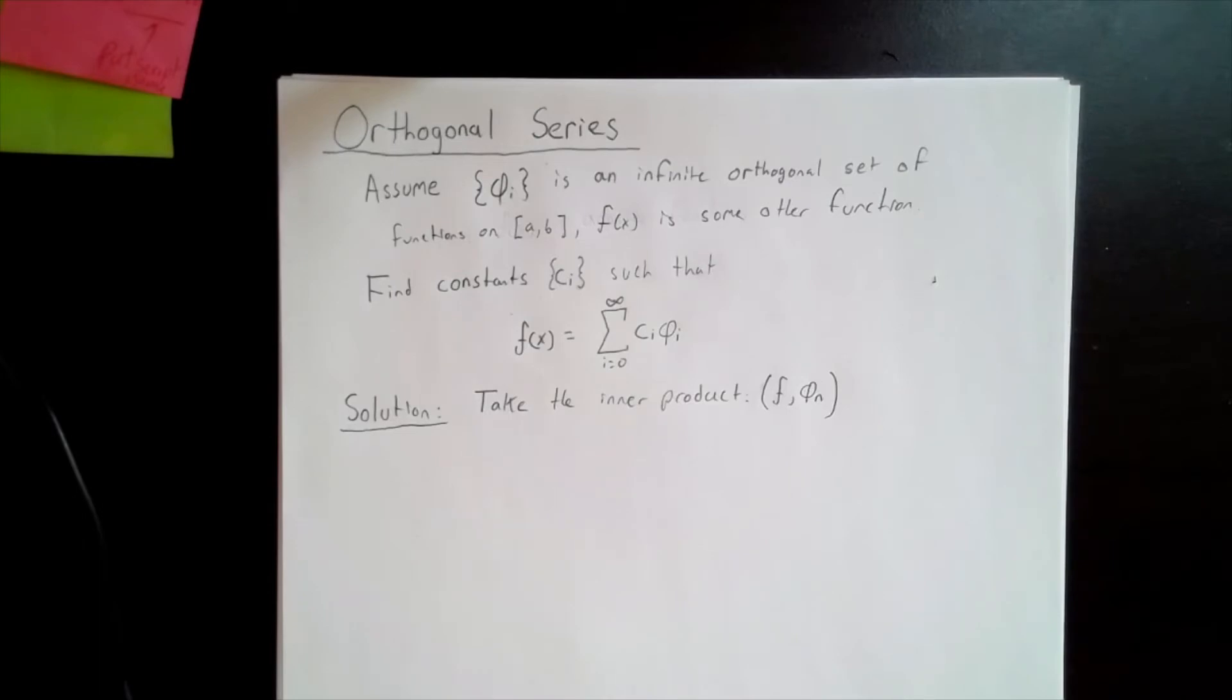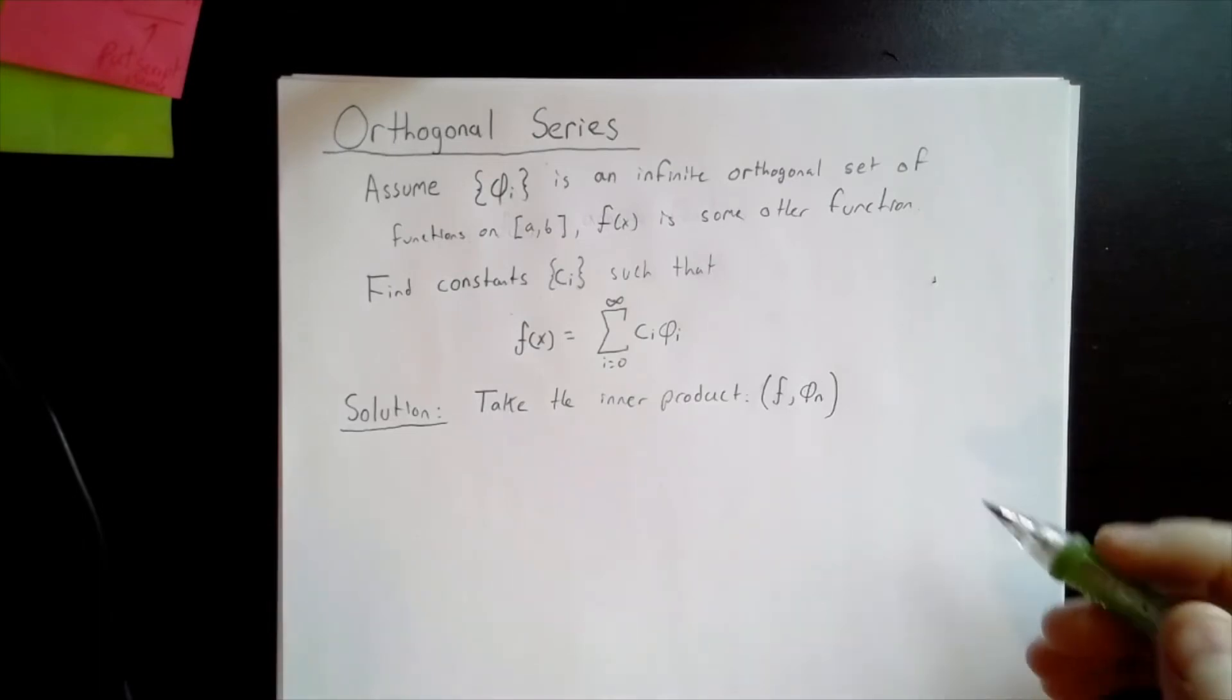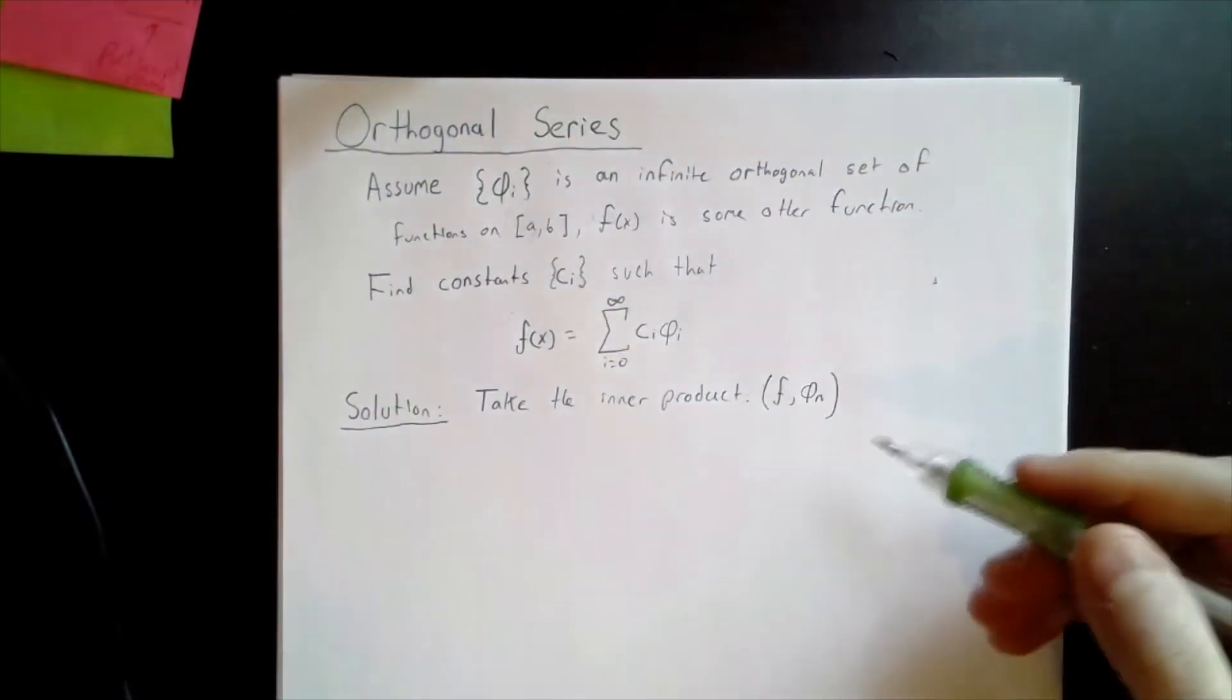We begin by taking the inner product of function f with some member of the set, say phi i.